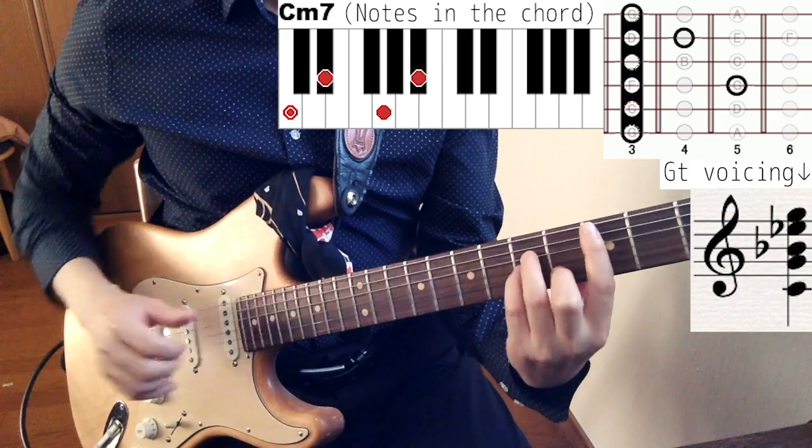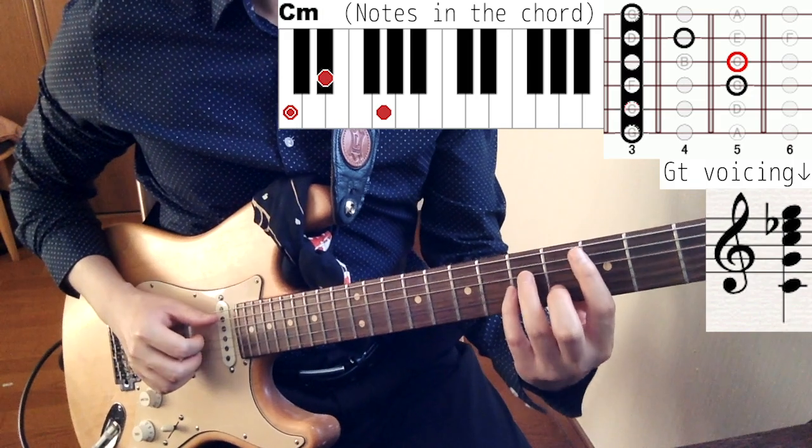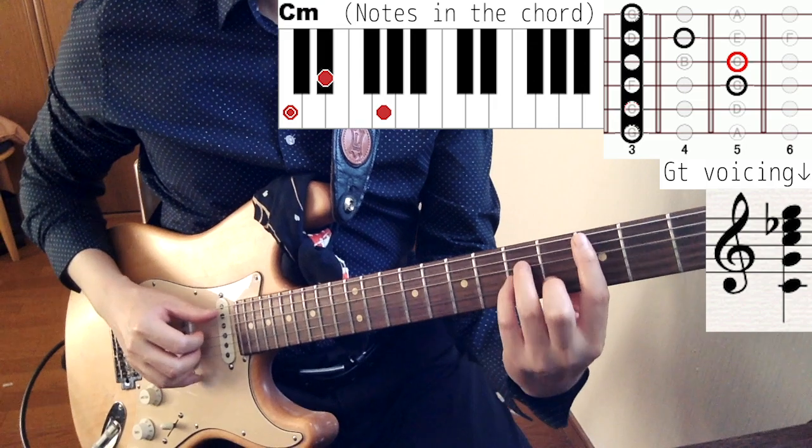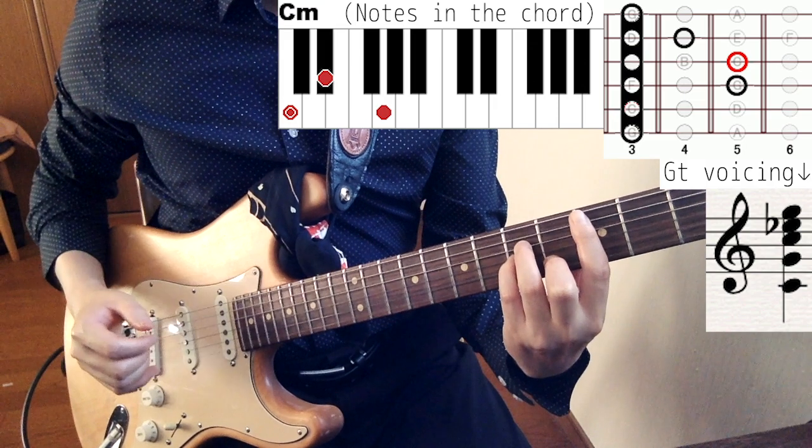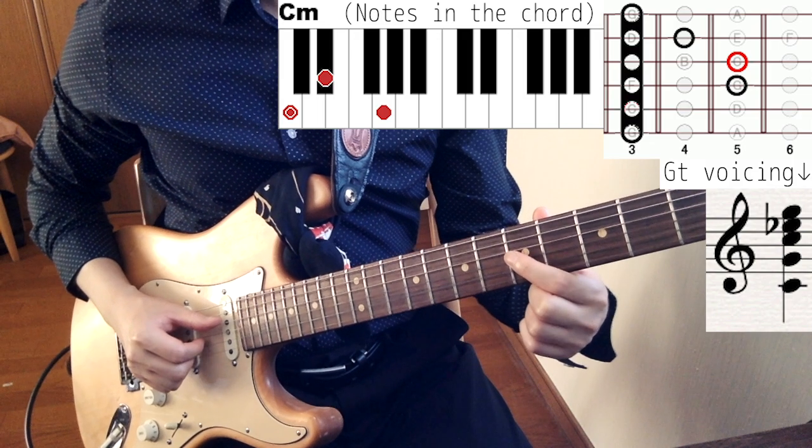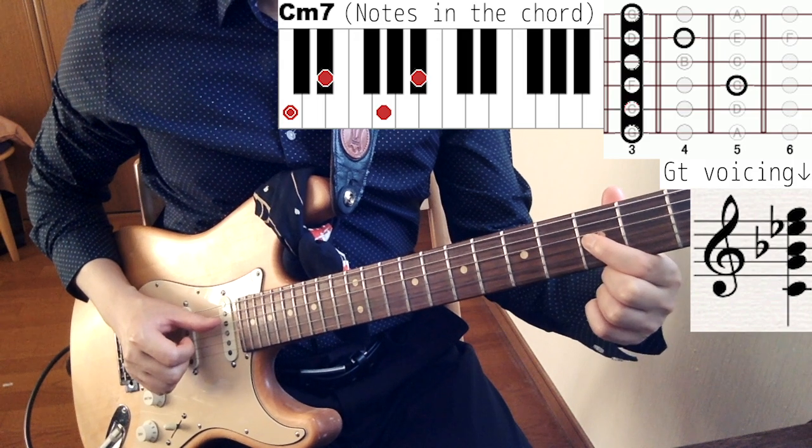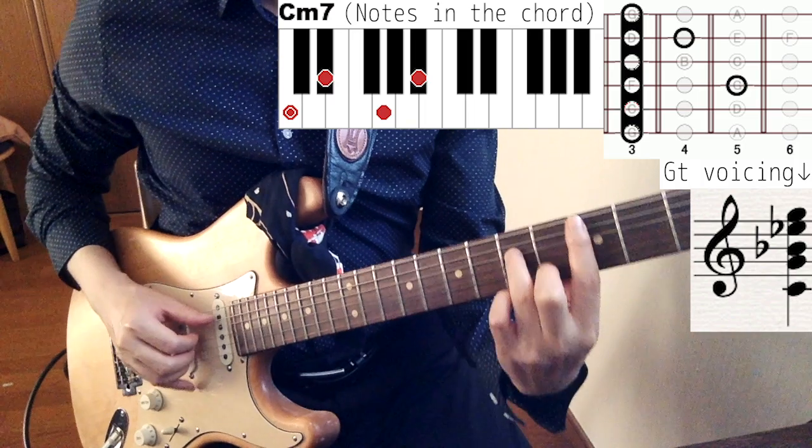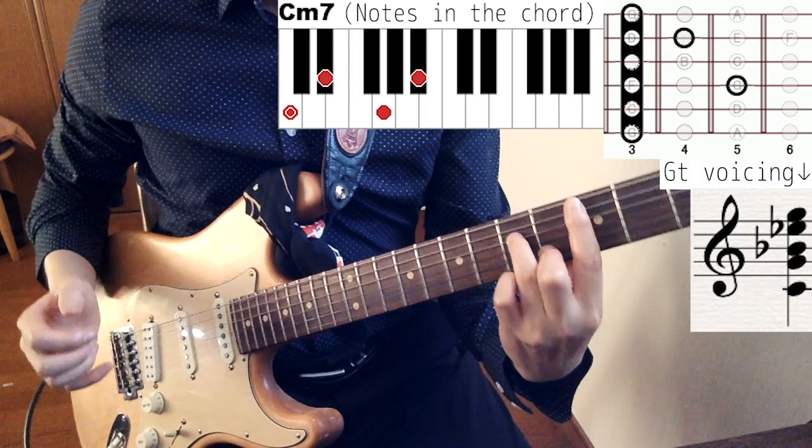It's basically just one note different from normal minor triad. So you move this root note, C, a whole step down to Bb, and you get this minor 9 chord.